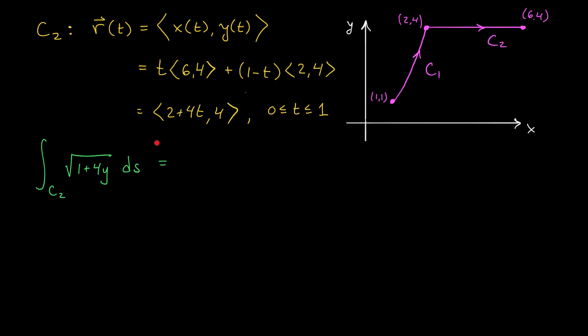This means that our line integral along C2 can be written as the integral from 0 to 1 of the square root of 1 plus 4y, of course here y is constantly 4, times that nasty square root, which this time I'm going to write more compactly as the norm of r prime t dt. Saves me a bit of writing here. Now, we can actually compute this quantity separately if we want. We can calculate r prime t from the description above. That's going to be (4,0).